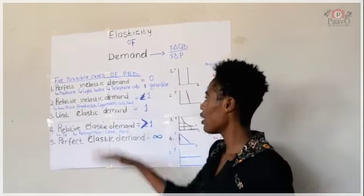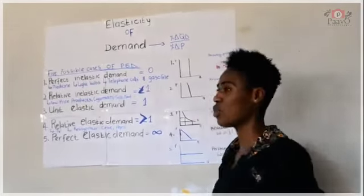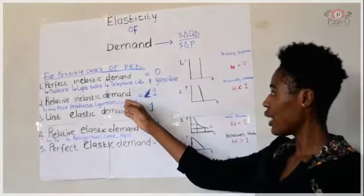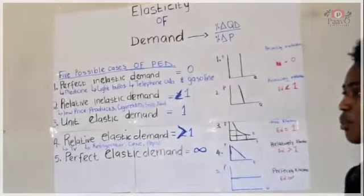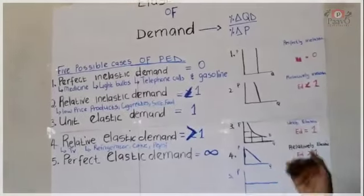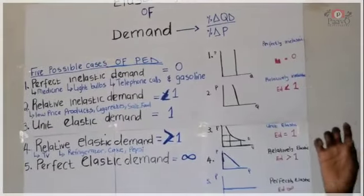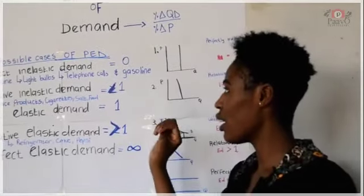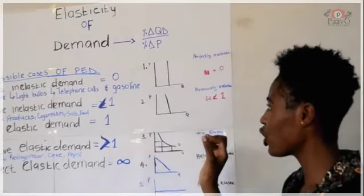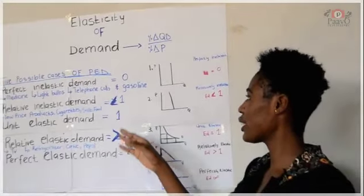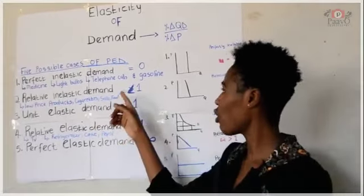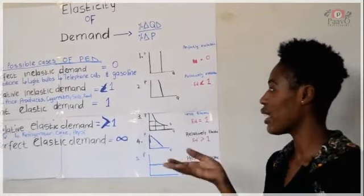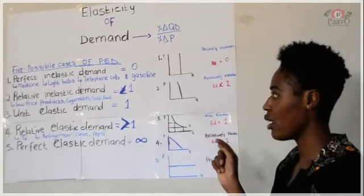Then we are looking at relative inelastic demand. With relative inelastic demand, if the price goes up, there will be a slight change in demand — just a slight change. That is why the coefficient of this demand is less than 1.